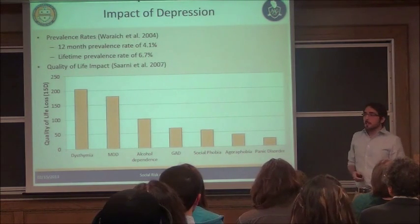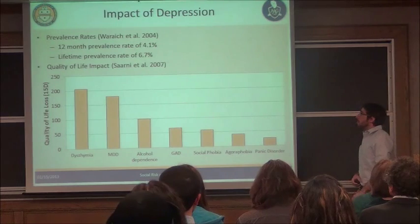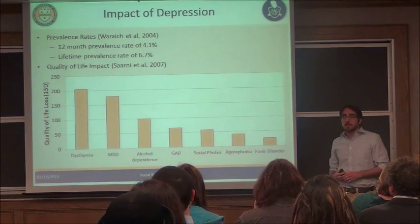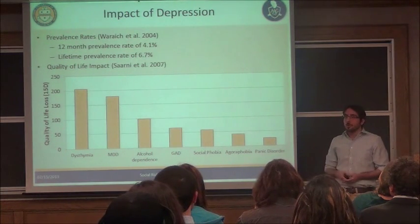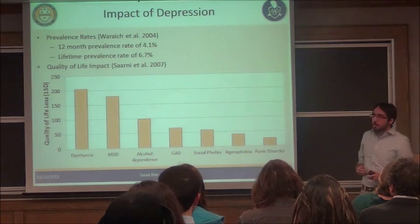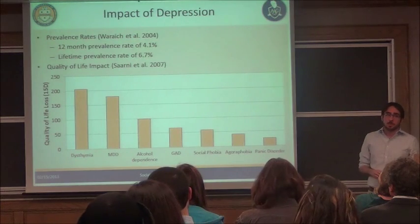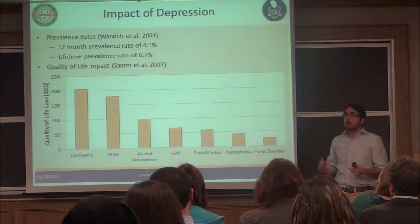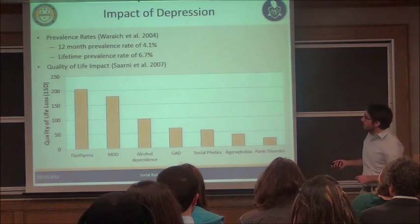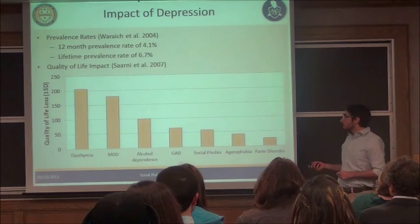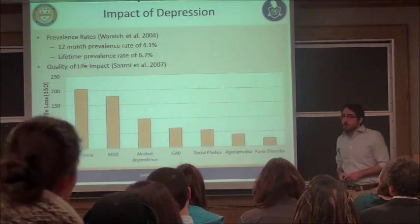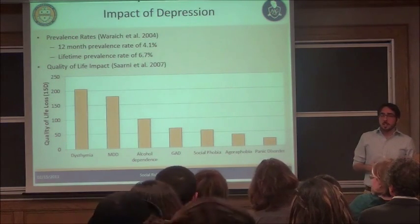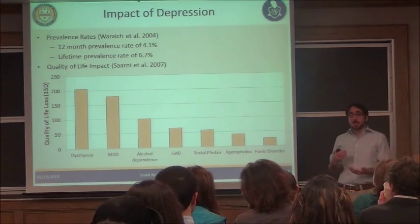When depression does happen, it can be very impactful. We have here a survey of common mental disorders and their quality of life loss — the higher the bar, the more debilitating it is. What you see is that the two top ones are dysthymia, a low-grade chronic depression, and major depressive disorder. This is really important to study because of its big impact and how common it is.